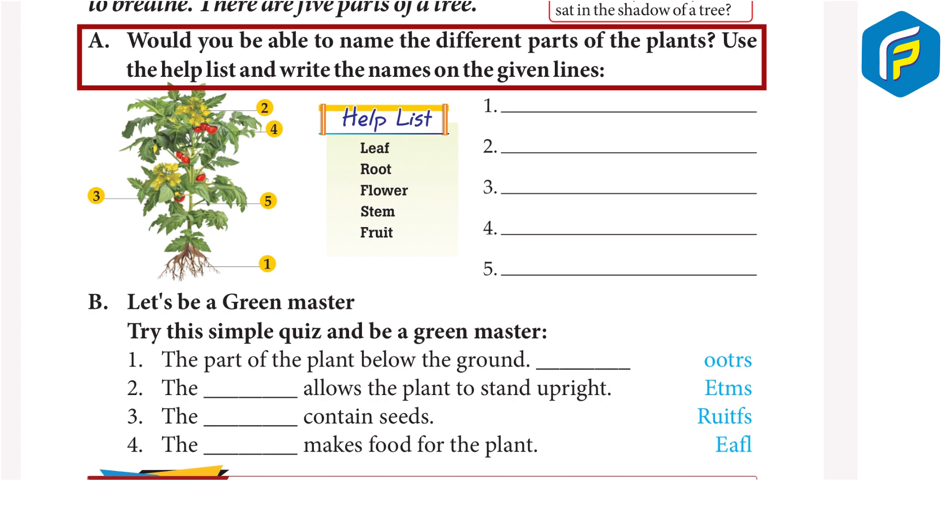One: root. Two: flower. Three: leaf. Four: fruit. Five: stem.